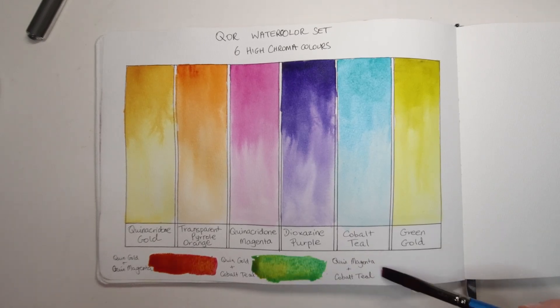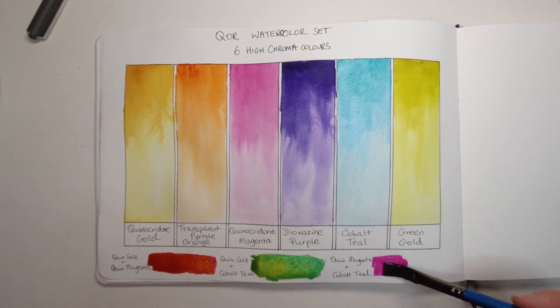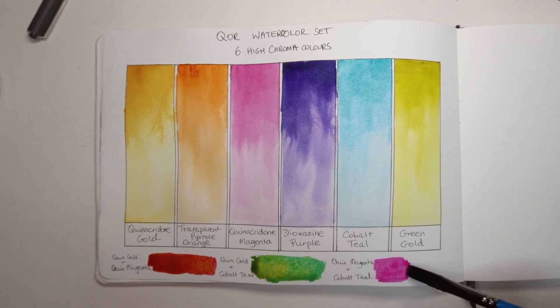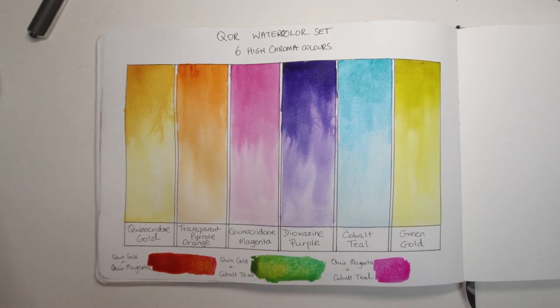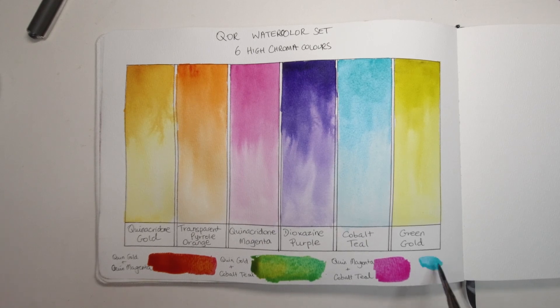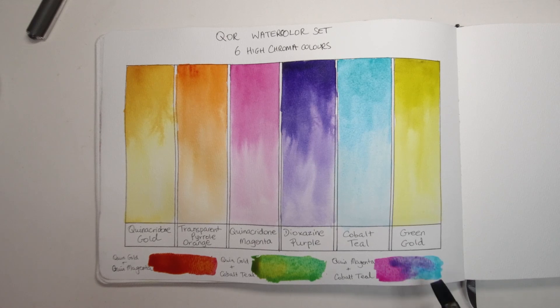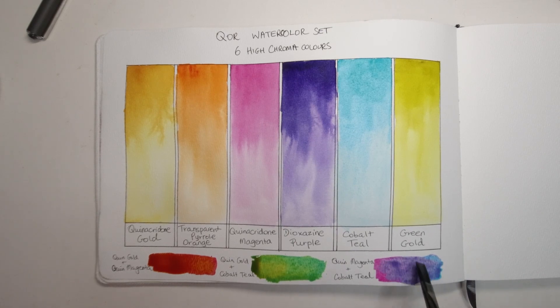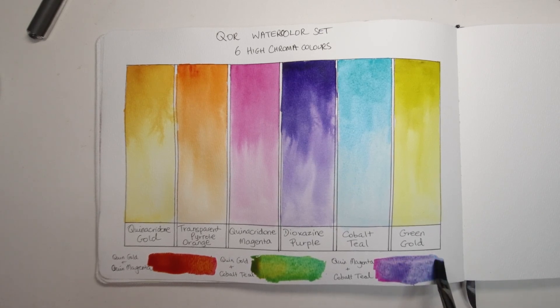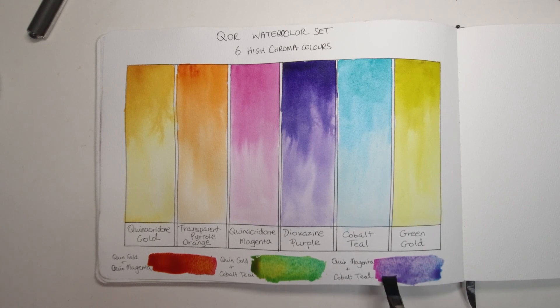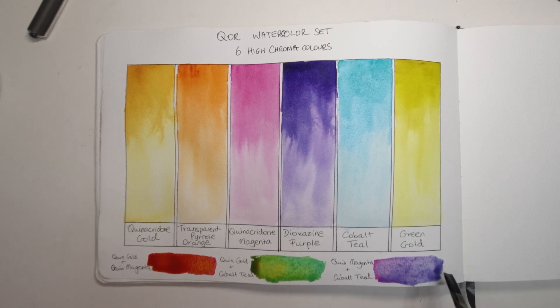And back with last one here is quinacridone magenta and cobalt teal. I'm expecting a good purple here because these are two very bright colors and yep, really pretty purple, similar to a light dioxazine purple. Once again on the cooler side because both the magenta and the cobalt teal are considered fairly cool colors.